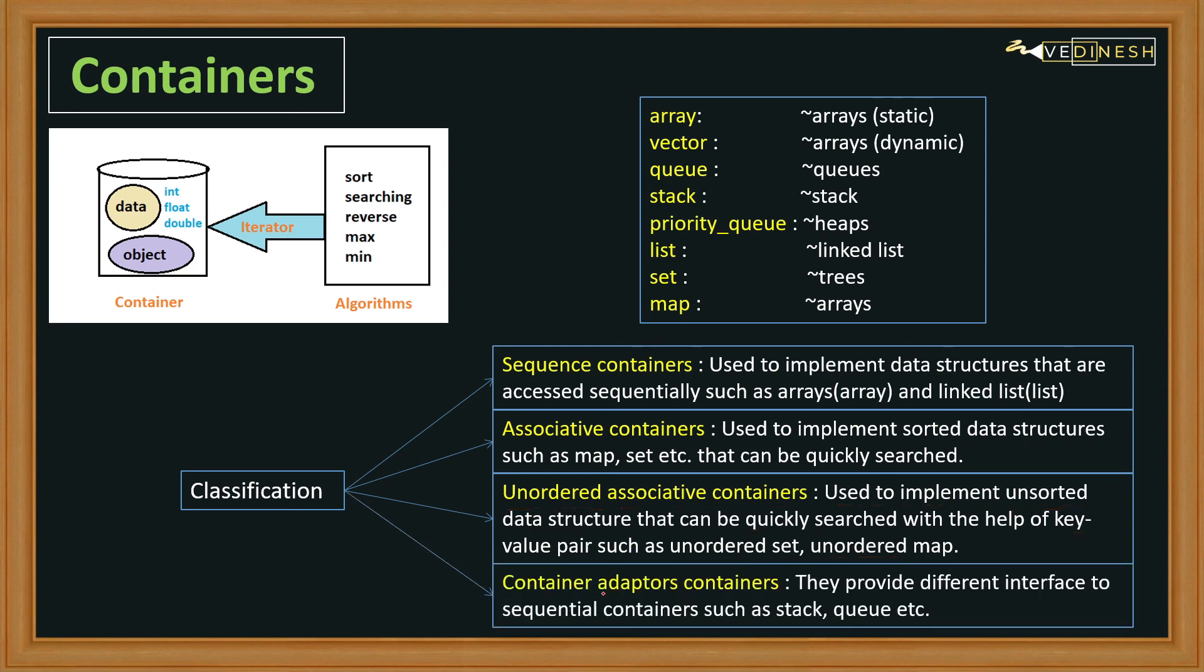Now the last type of container are called adapter containers. These are also a kind of sequential container but with different interfaces, like first-in-first-out or last-in-first-out that we've seen earlier. The examples would be stack and queue. With this, I hope the containers, the various types of containers that we're going to cover in this course, and finally the classification of containers are pretty clear to you. Excellent.